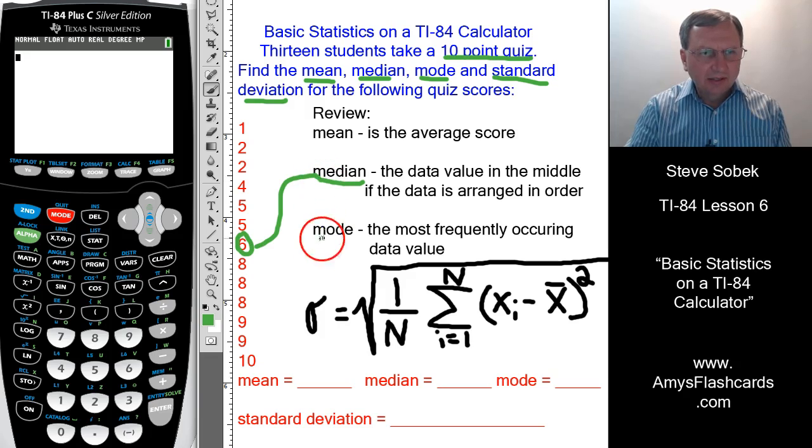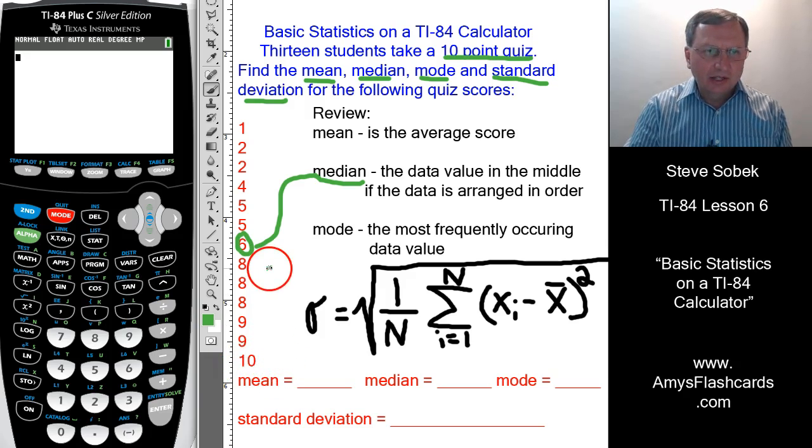By the way, if you have an even number of data values, then there's no data value exactly in the middle. For example, if there was another student who got a perfect score, we'd have 14 scores. And the six and the eight would both be equally in the middle. The median would be the average of those two. Six plus eight divided by two, or seven, would be the median. So in this case, we have six. We could write in the median here, it is six.